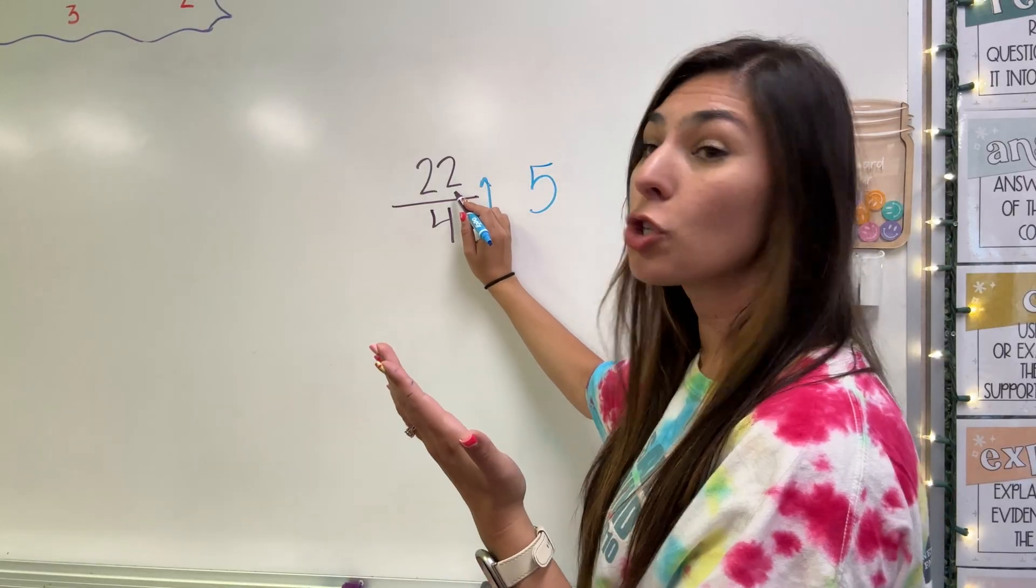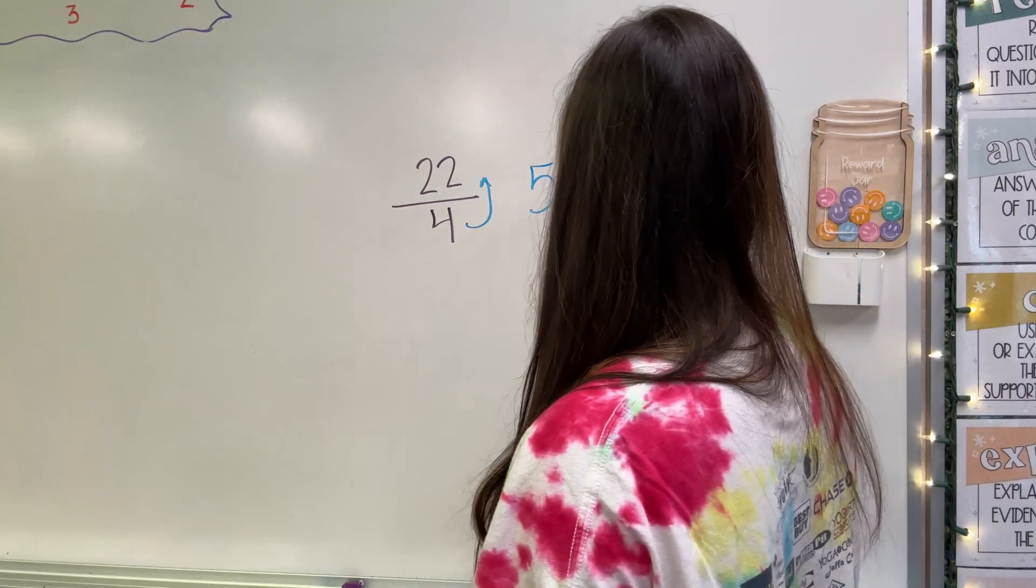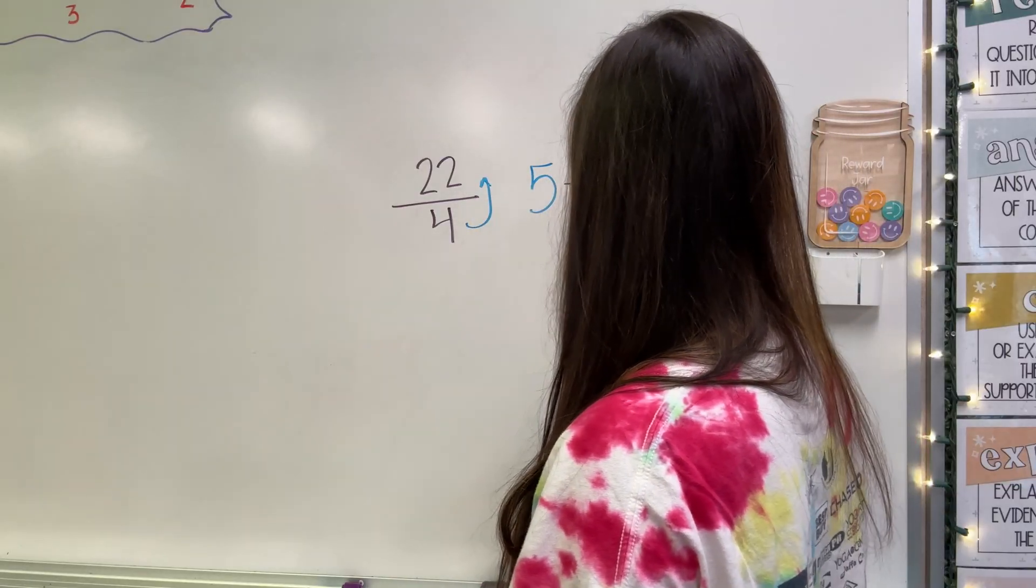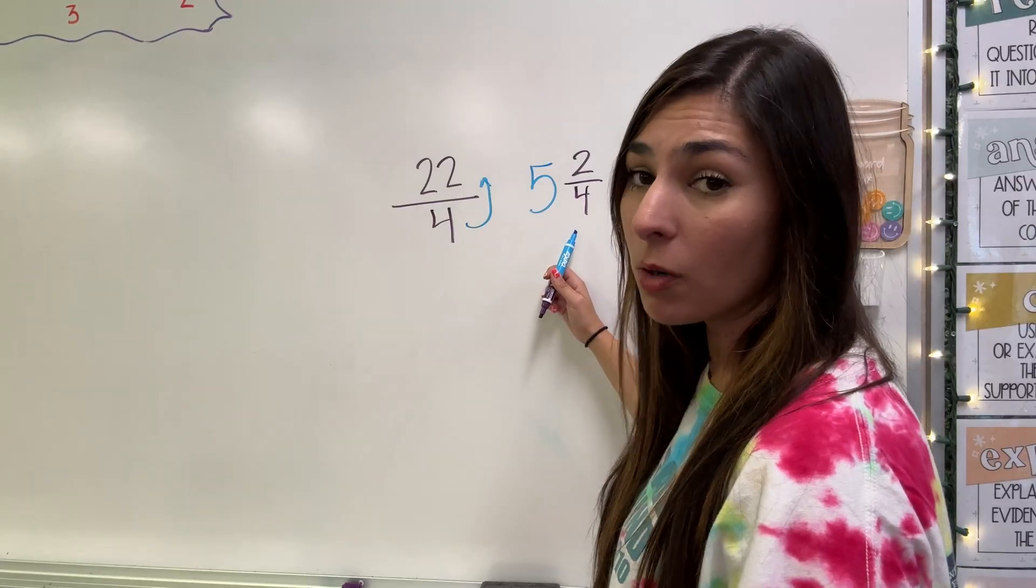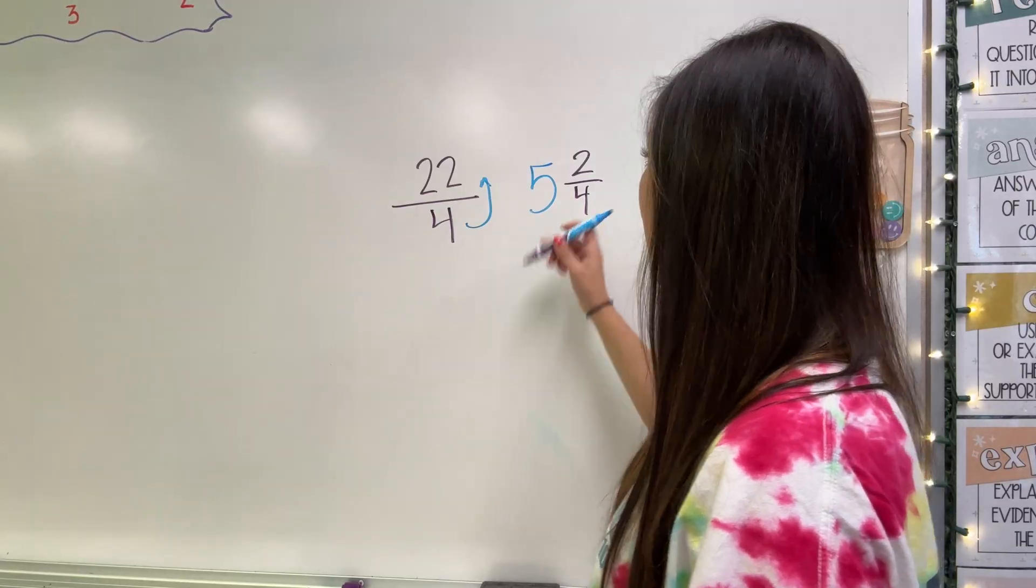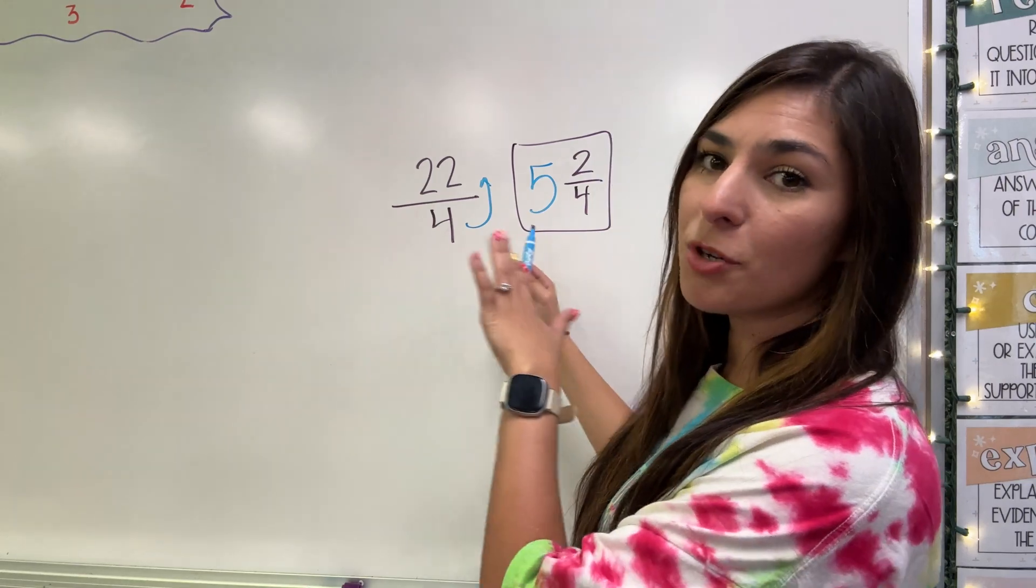So I'm going to have five times, but because that gives me 20, how many do I have left? I'm going to have two left over. So that's going to be two. And I keep the denominator four. So my improper fraction turning into a mixed number would be five and two fourths.